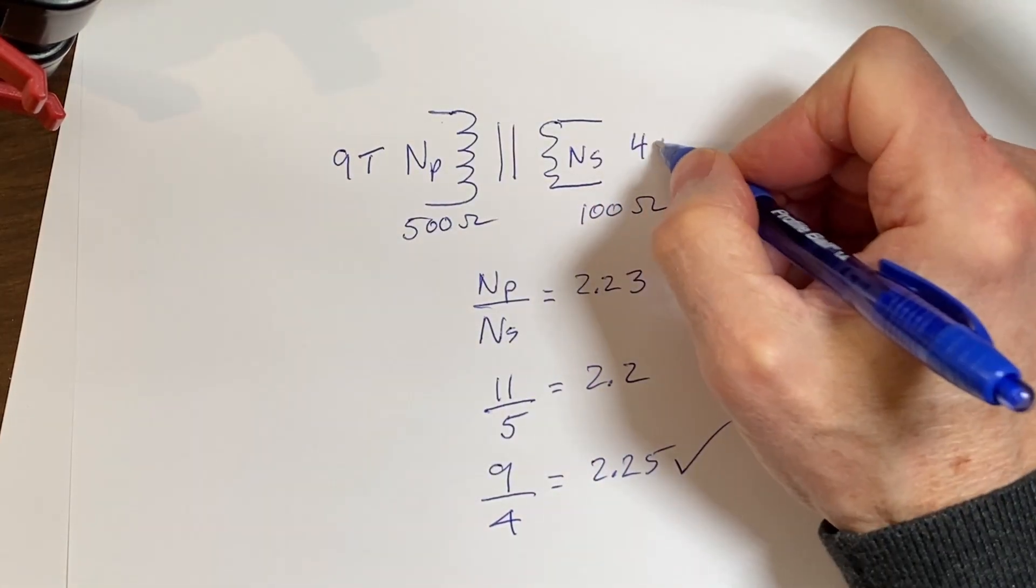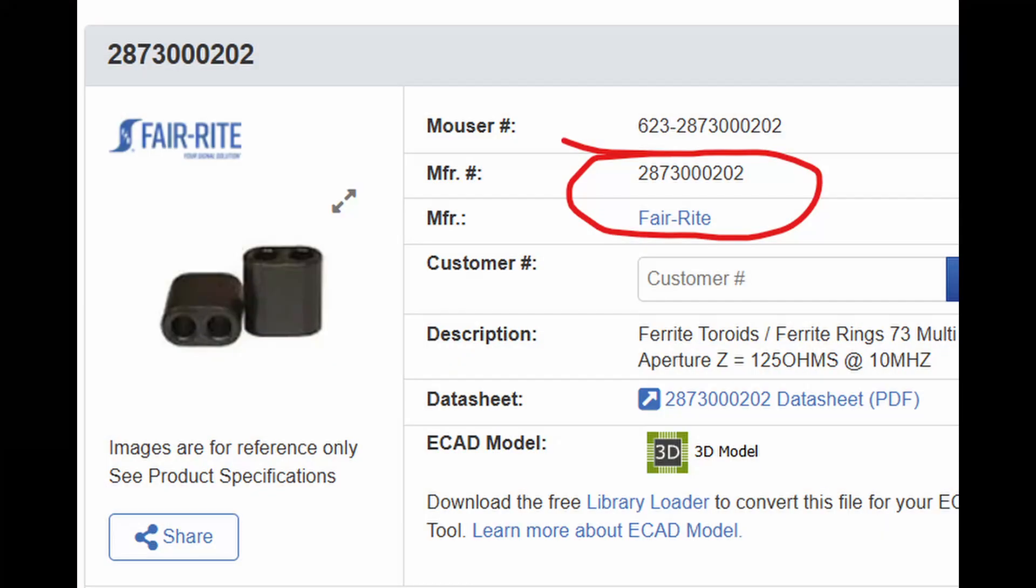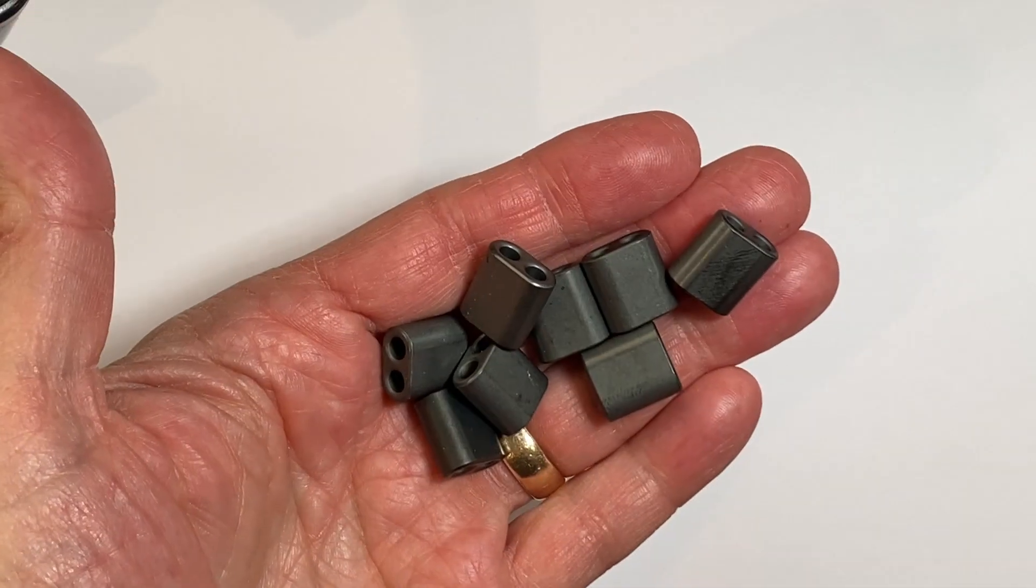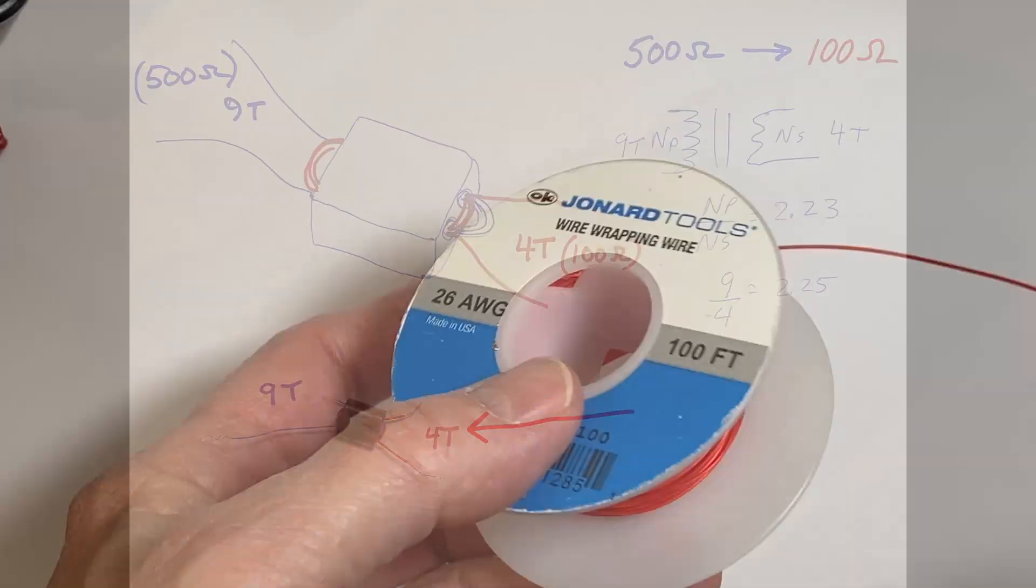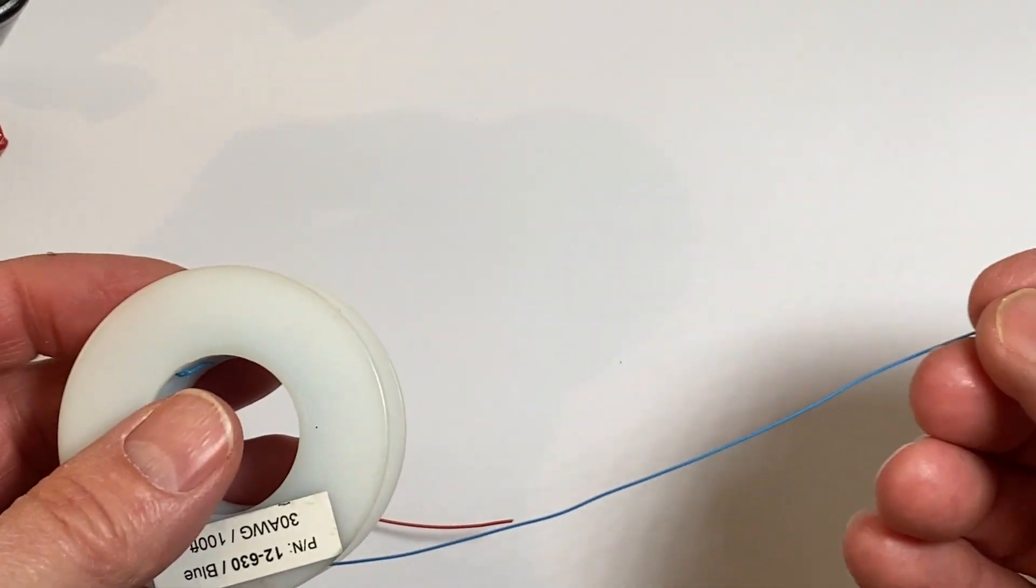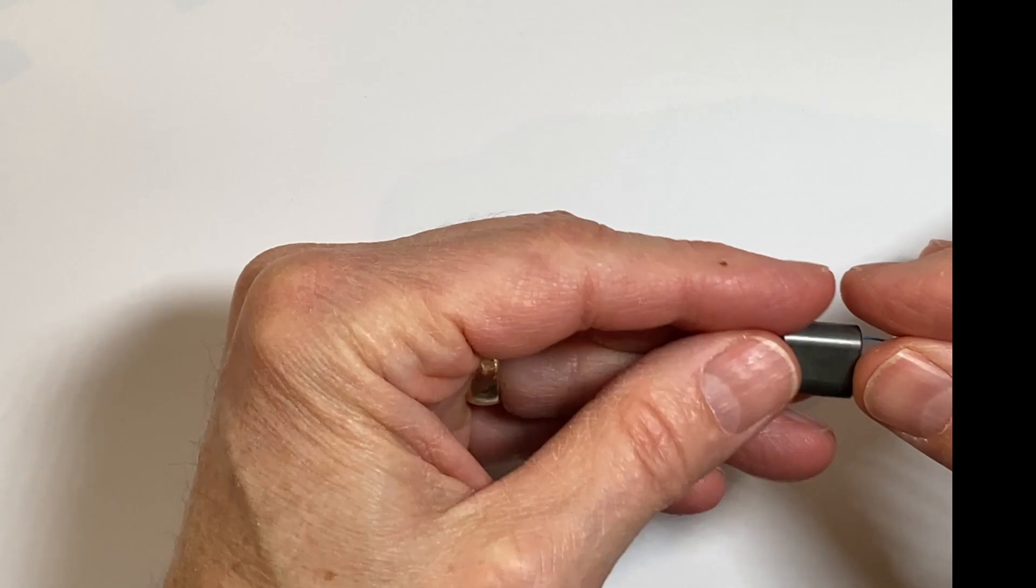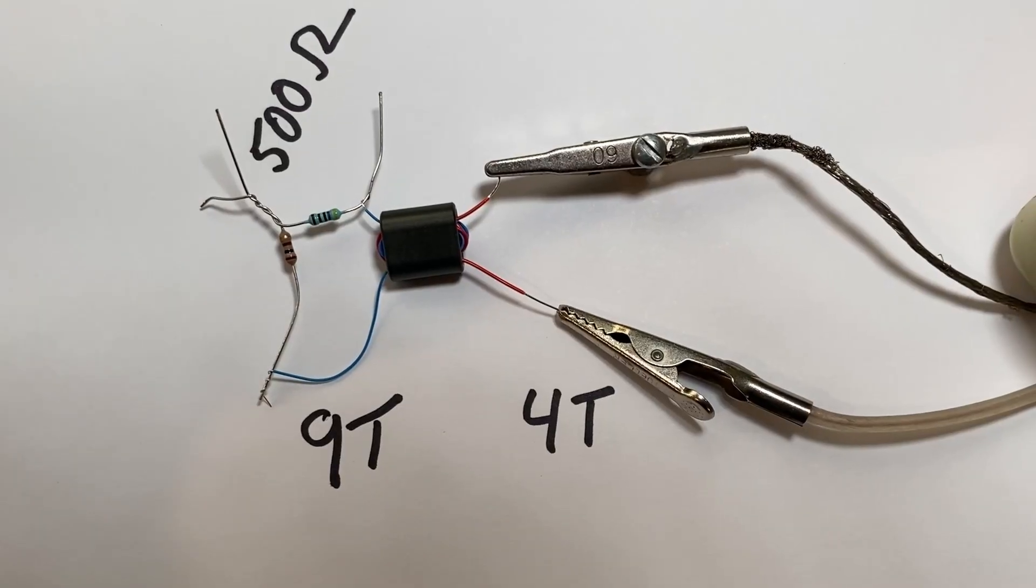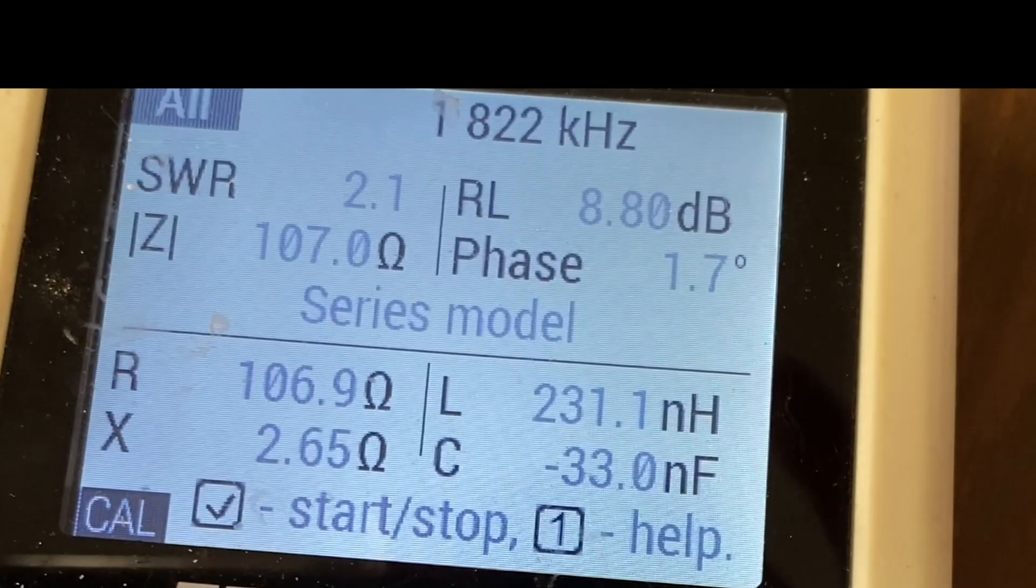For most purposes, the ferrite 2873000202 binocular core, available from Mouser and others at about 75 cents each, are a good choice. Buy a bunch of them. You wind 9 turns here, 4 turns here. I use this Teflon wire wrap. It's nice and tough, but you can use whatever you want. One turn is the wire passing through and back on the core like this. If you want to test it, put a 500 ohm resistor here and measure the output. Oh look, it's 100 ohms. Perfect.